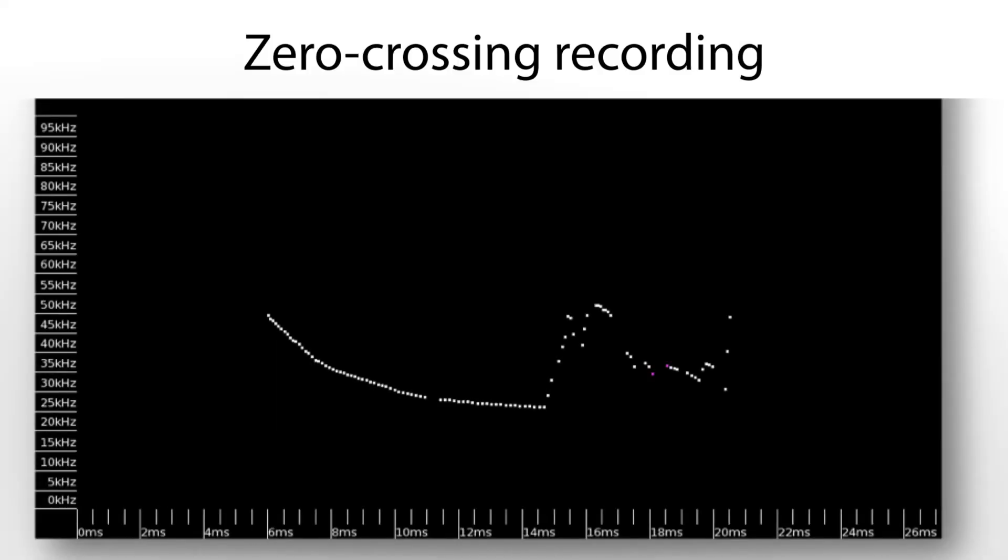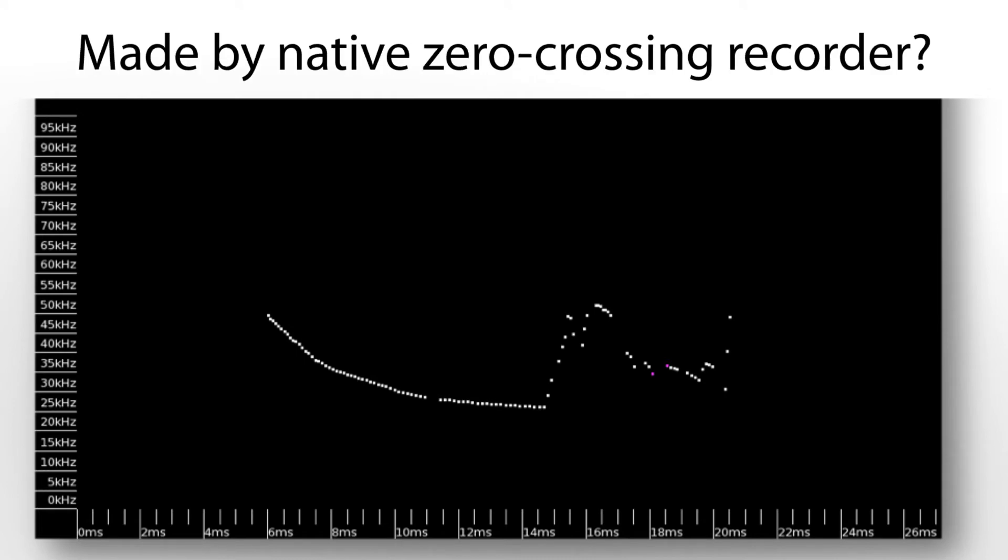Here is a zero crossing view of a bat call. Some ultrasonic recorders only create zero crossing files, so if this file had been created by a native zero crossing recorder, this is what would have been captured.